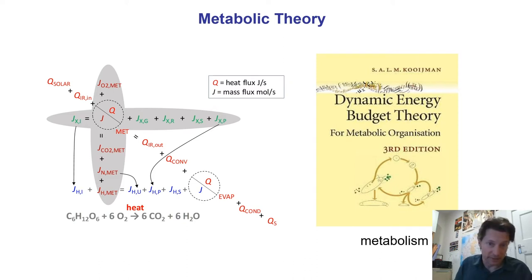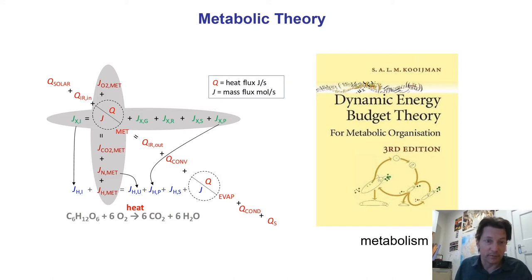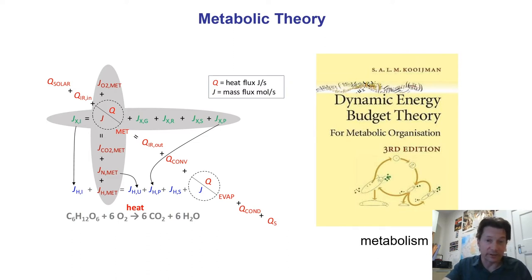At the end of this section on mechanistic niche modelling, I'll show how these integrate and allow us to calculate, using all of these things together, the time course of the organism's ontogeny and what that means for the organism's ability to survive, for its fitness, and for its ability to persist at a location.